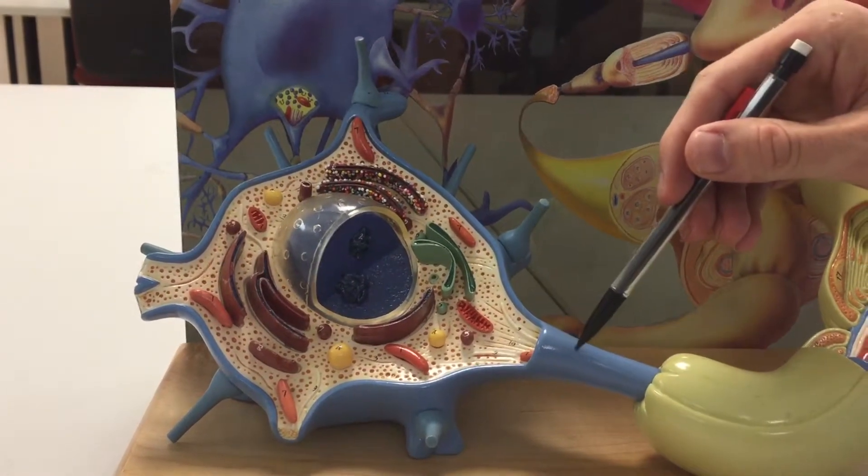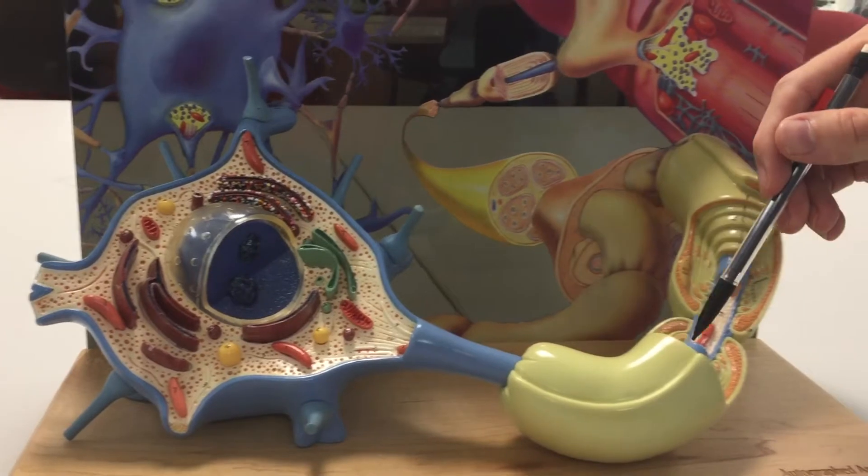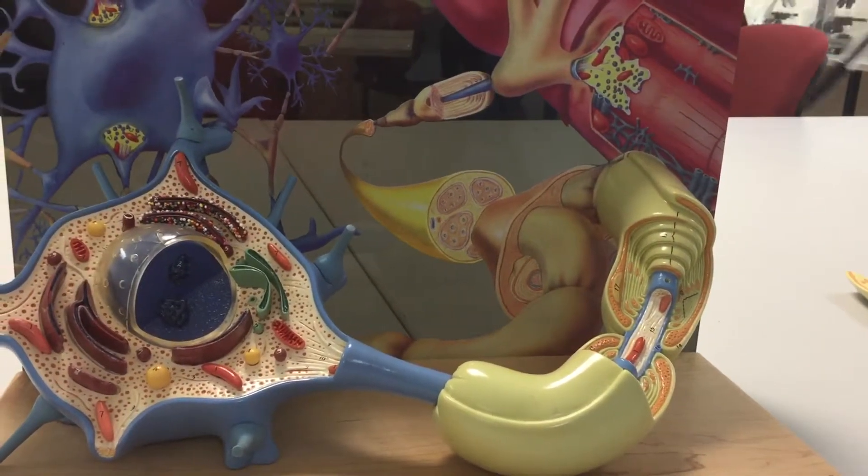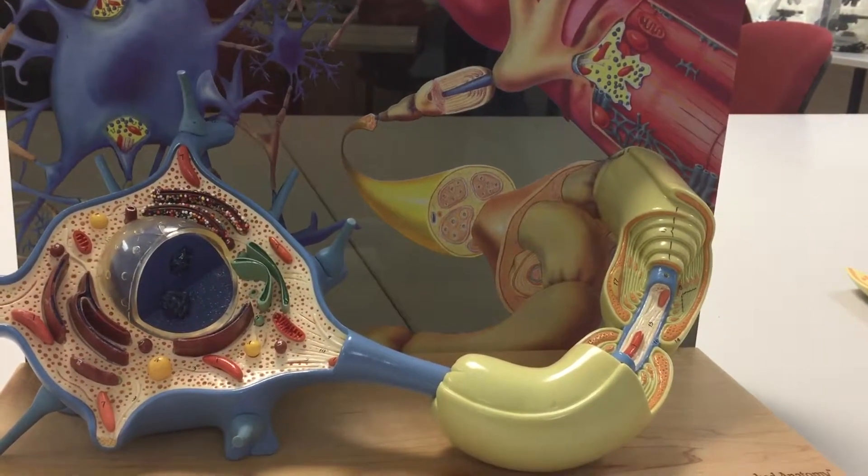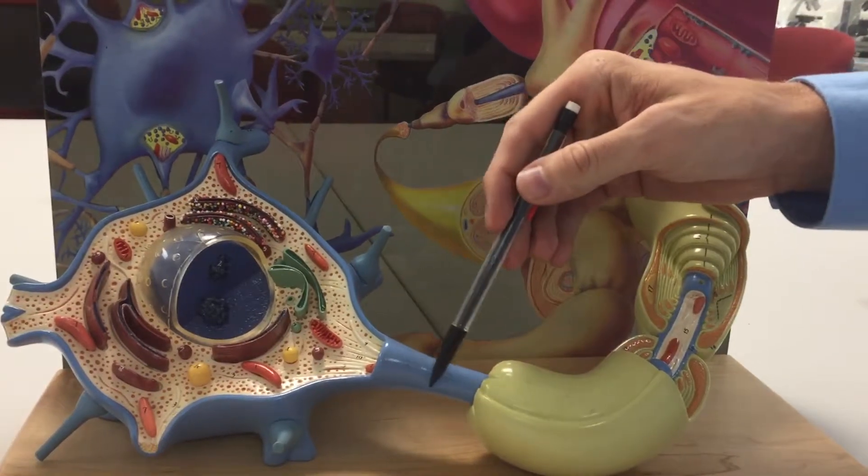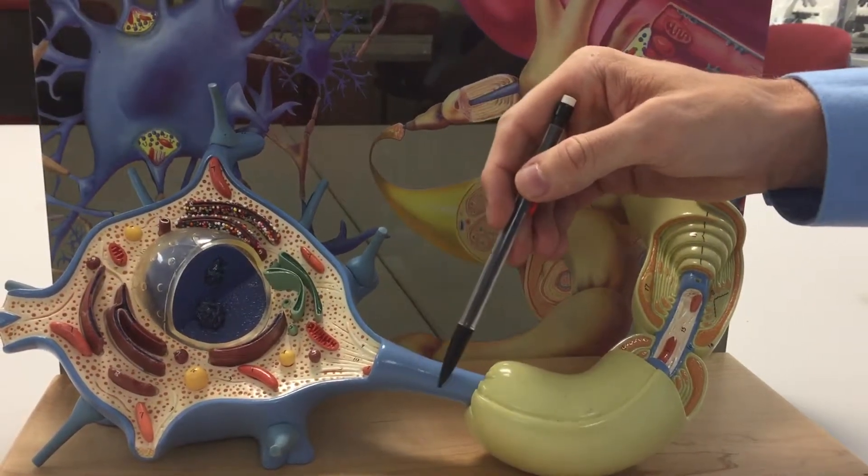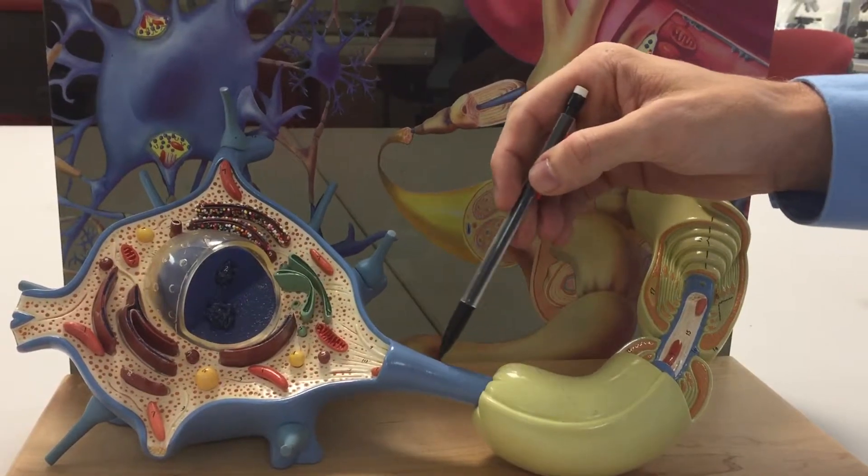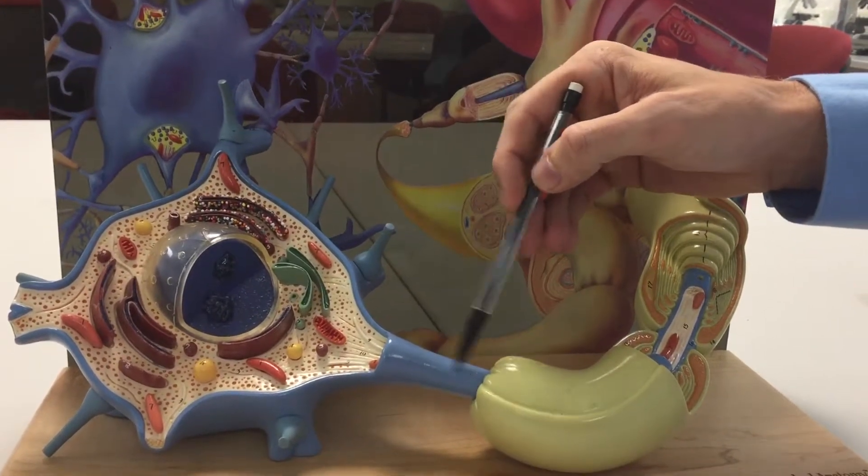This process that sends information away from the cell body is called an axon. This portion of the axon, which you may have heard referred to as the trigger zone, is called the axon hillock.